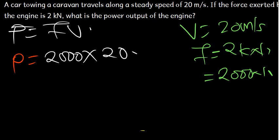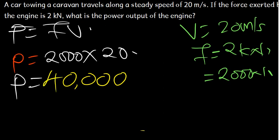So what I'm going to do is 2000 times 20. This is just the same as saying we write 4 zeros, then 2 times 2 is going to give us 4. So we are getting 40,000 watts.